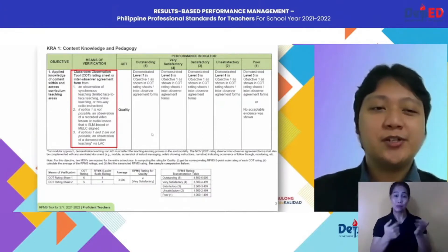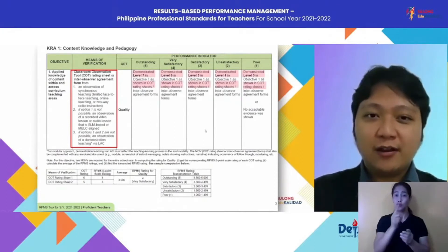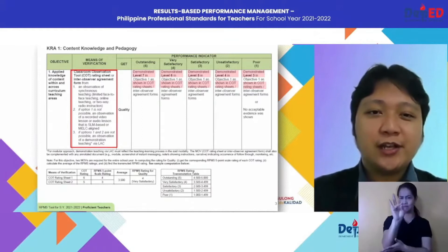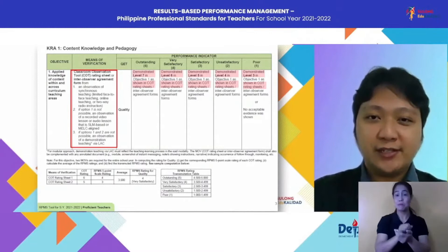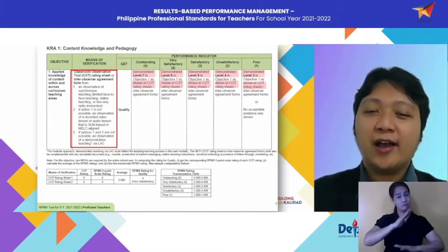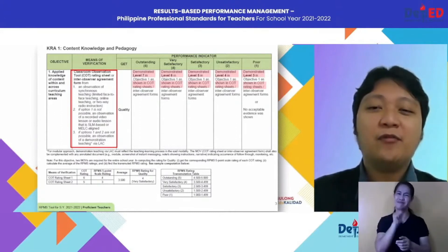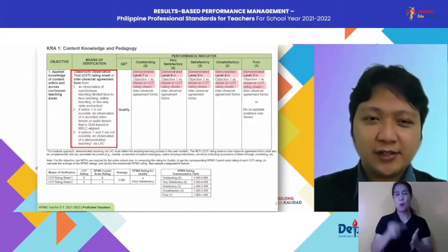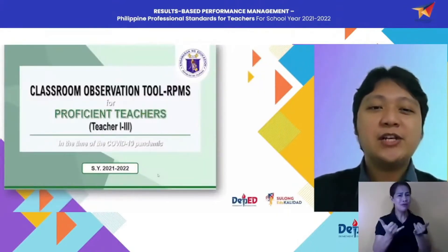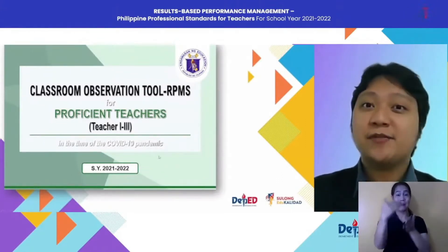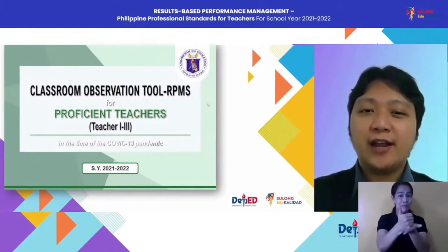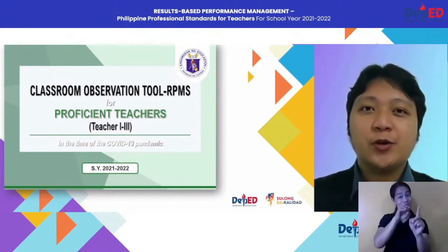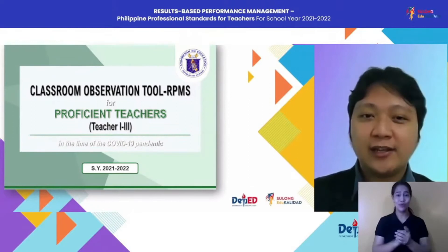Now, regarding the performance indicators for this objective: to get an outstanding rating, you must demonstrate level seven as shown in the COT rating sheet. For Very Satisfactory, you must demonstrate level six. For Satisfactory, level five. For Unsatisfactory, level four. For Poor, level three. What do these levels mean? We refer to our COT RPMS rubric, which is very helpful for our raters as they rate our teachers — and for the ratees as well. If you wish to reflect a good demonstration of practice, you may also refer to this rubric.